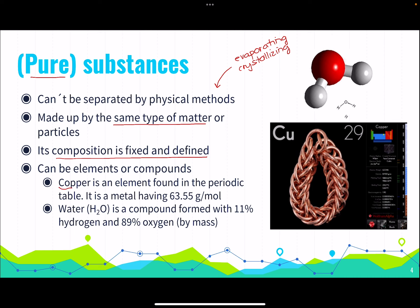Copper is an element we can find in the periodic table — it is a metal with a molecular mass of 63.55 grams per mole. On the other hand, water shows us that composition is fixed and defined. Its formula is H2O, always composed of 11% hydrogen and 89% oxygen by mass. If we have H2O2 or anything other than H2O, it is not water. Water is a compound with a fixed and defined composition.